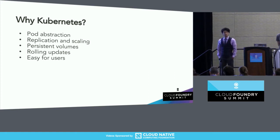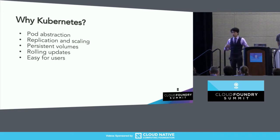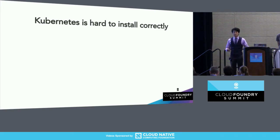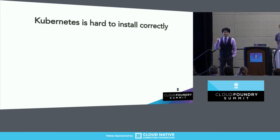Kubernetes supports rolling updates for your workloads, making it easy for users to access all these features. But the problem with these low-level abstractions is that Kubernetes is very difficult to install in a production environment.